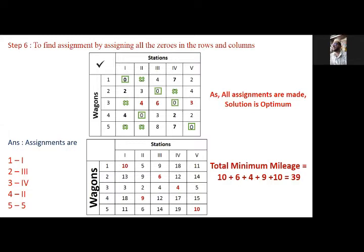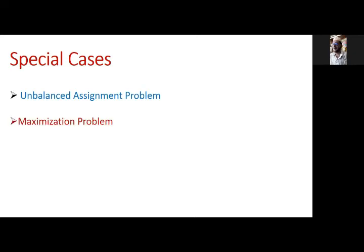Now let us see the special cases in the assignment problem. The first special case is the unbalanced assignment problem — where the number of rows is not equal to the number of columns. The second special case is the maximization problem: instead of minimizing cost or time, the question asks to find maximum profit or maximum sales.